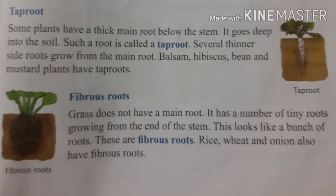Tap root: some plants have a thick main root below the stem which goes deep into the soil — such a root is called a tap root. Several thinner side roots grow from the main root. Balsam, hibiscus, bean, and mustard plants have tap roots.